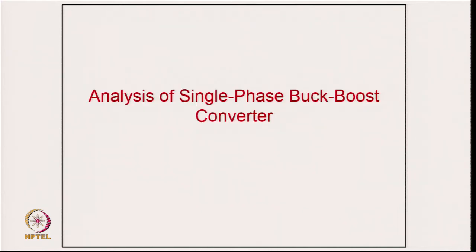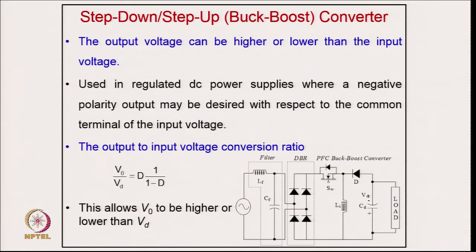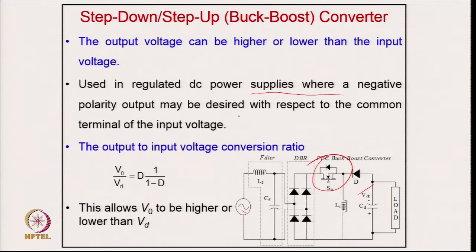Coming to the analysis of single-phase buck-boost converters, the simplest case provides step-down or step-up output voltage over a wide range. With a universal AC mains input of 0 to 270 volts, the output voltage can be controlled from 0 to 300–400 volts. The disadvantage is that the voltage across the device is the sum of input and output voltage, requiring a high voltage rating device.